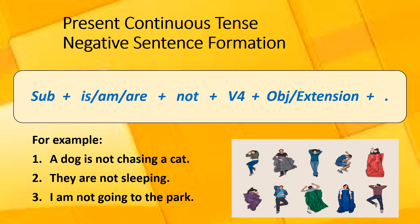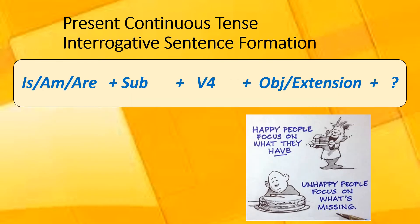Let's talk about the interrogative sentence formation now. Here is the formula. You take out the auxiliary verb — is, am, or are — and place it at the start of the sentence. Then you add the subject. Then you put the fourth form of the verb. Then comes the object or extension. And at the end of the interrogative sentence, you always have a question mark.